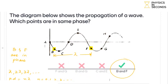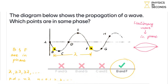Now I will tell you about stationary waves. In a stationary wave, if we ask which points are in phase — all points between two consecutive nodes are in phase. We apply this rule using lambda and lambda by 2. In a stationary wave, points within the same segment between two nodes are in phase, but points across an anti-node will not be in phase.